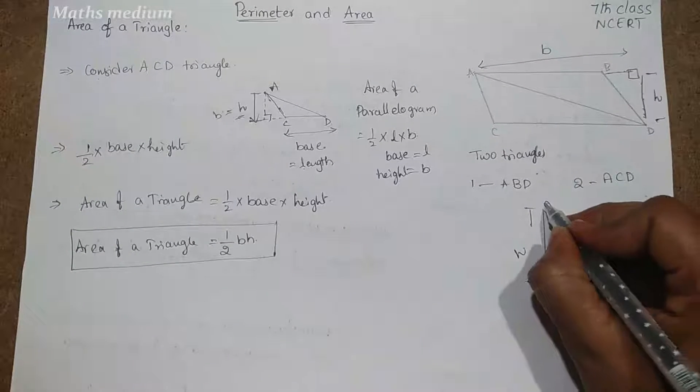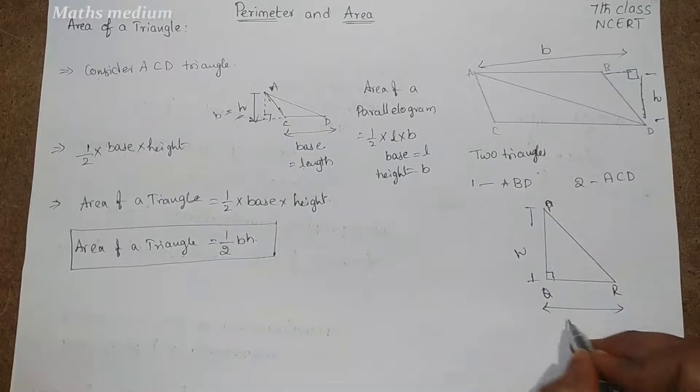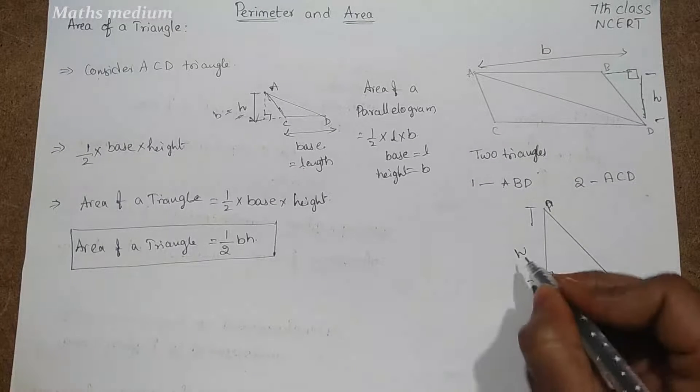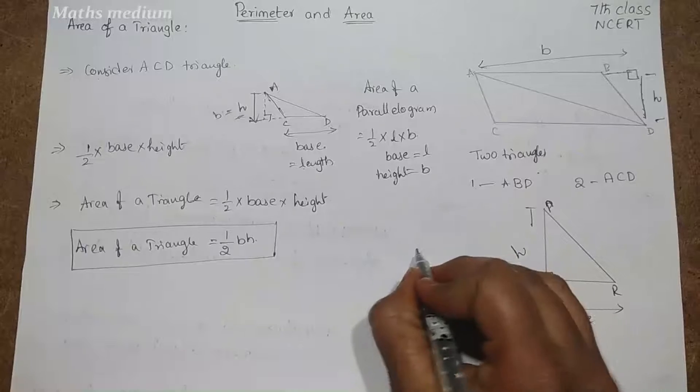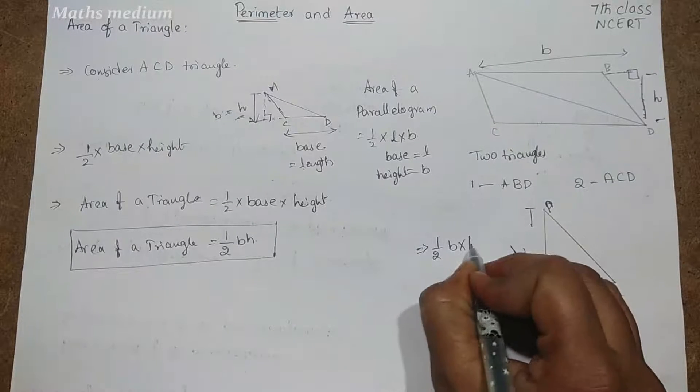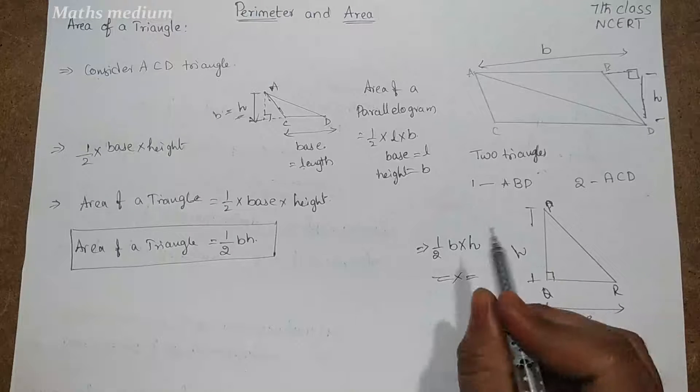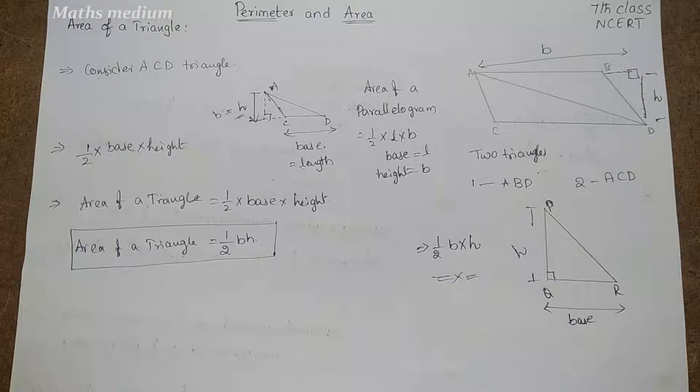This is PQR triangle and this is called base, and this is called height. So here also we can calculate that as half into B into H. So from this we got this, that is the area of a triangle.